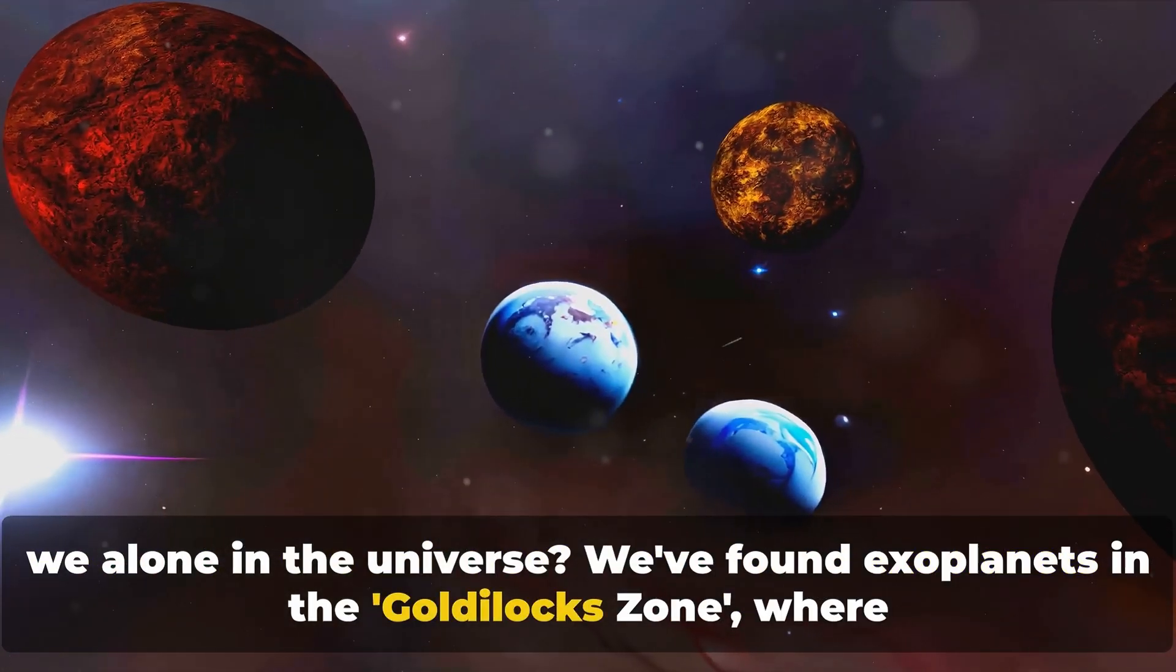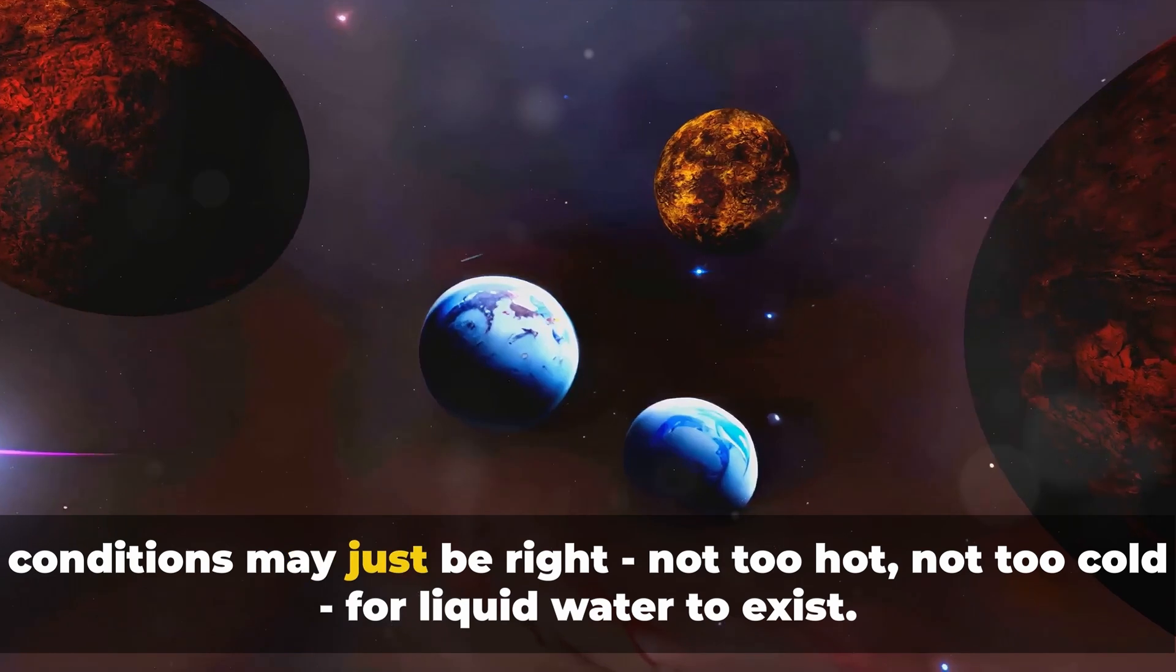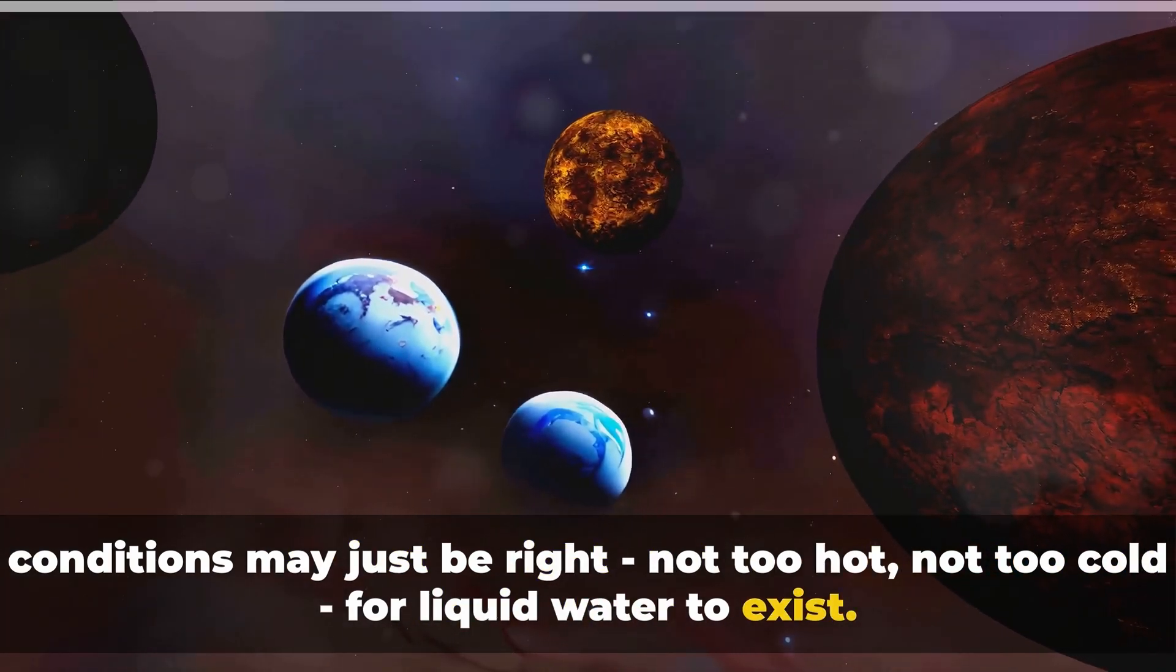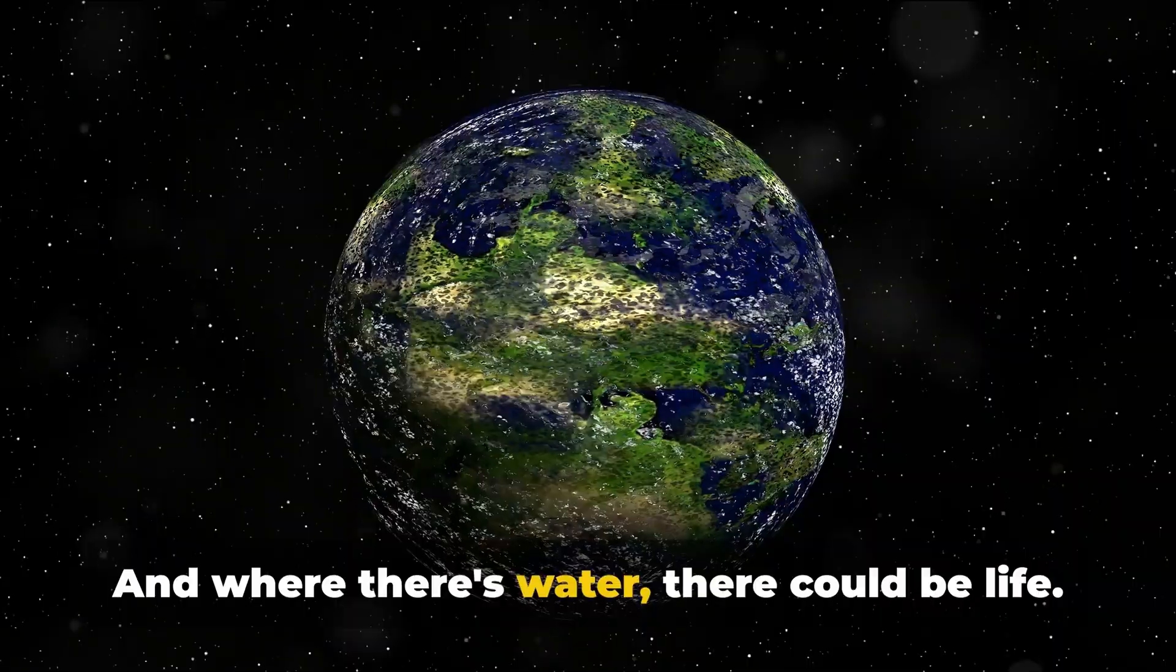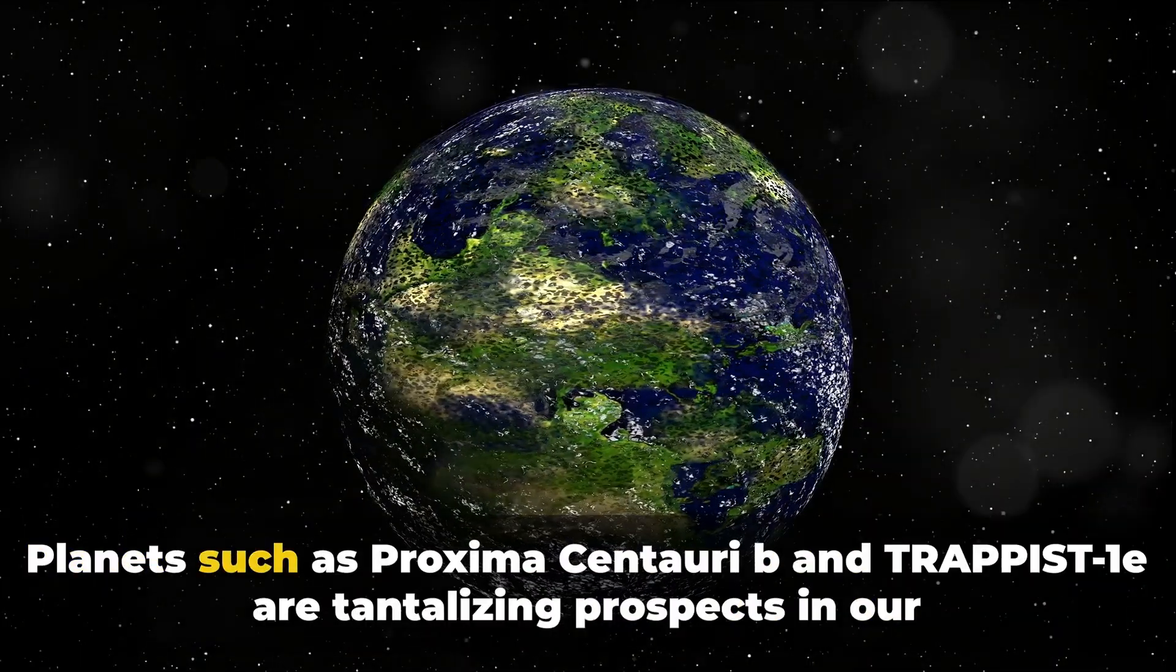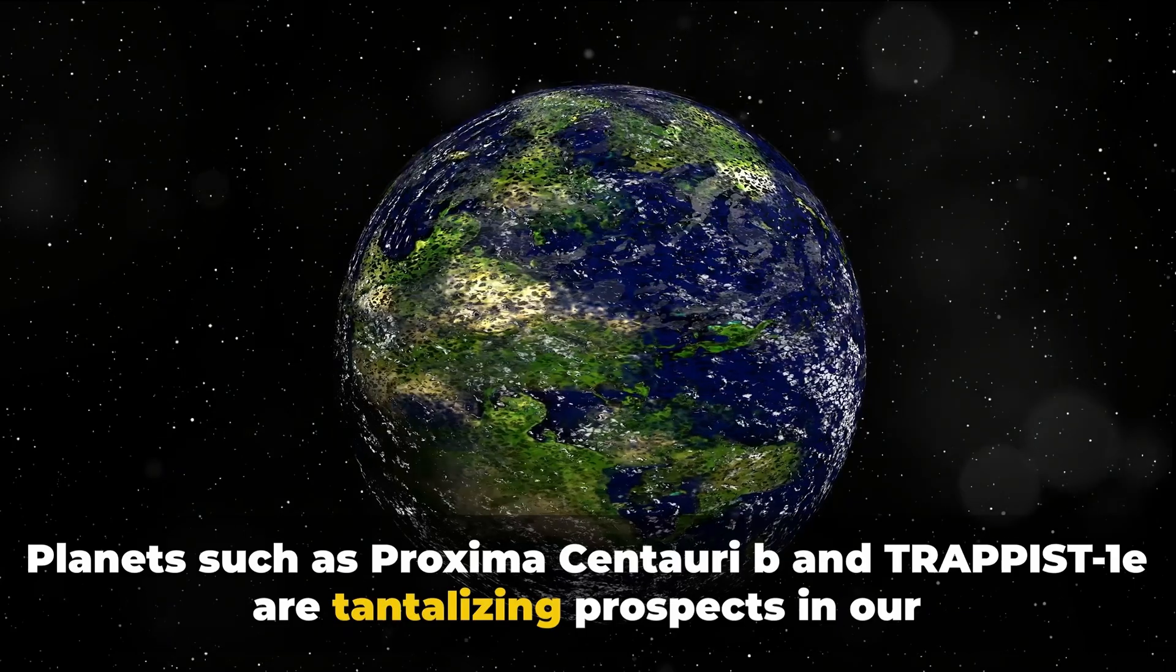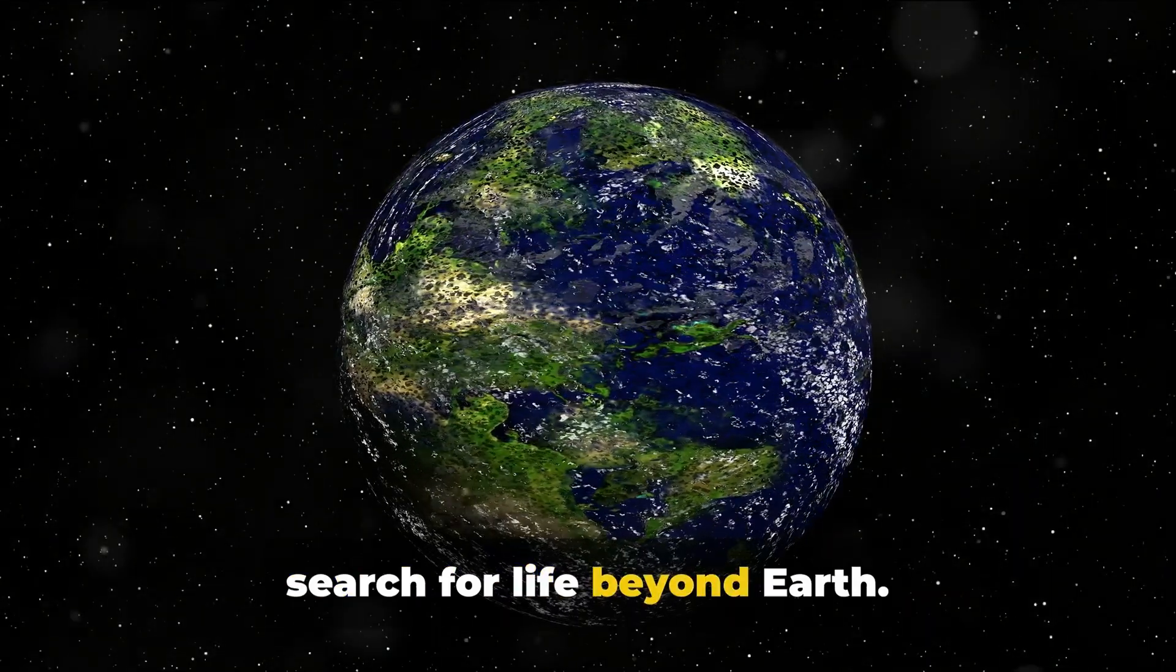We've found exoplanets in the Goldilocks zone, where conditions may just be right, not too hot, not too cold, for liquid water to exist. And where there's water, there could be life. Planets such as Proxima Centauri b and TRAPPIST-1e are tantalizing prospects in our search for life beyond Earth.